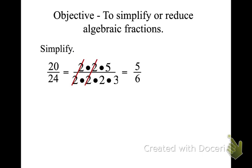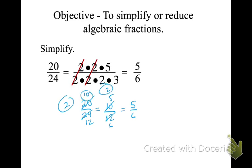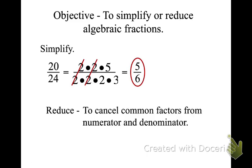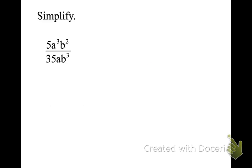The same thing applies if I had 20 over 24 and didn't pick the greatest common factor. If I divide by 2, I'm left with 10 over 12. I can still pull out another 2: 2 goes into 10 five times and into 12 six times. To reduce is to cancel a common factor from the numerator and denominator — we're looking for common factors that create that fancy 1.